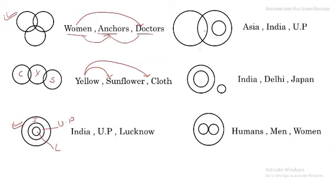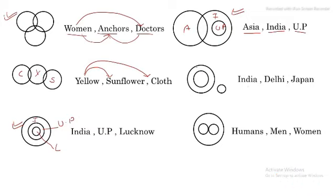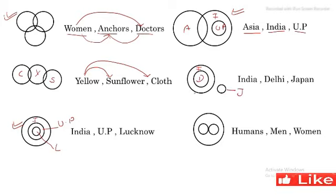Let us see the next Venn diagram. Now see — India, Delhi and Japan. India mein Delhi hai, so India is a big circle and Delhi is a small circle inside it. Japan is completely different from India, so Japan is represented as a separate circle outside. This type of relationship can be shown by this type of Venn diagram.